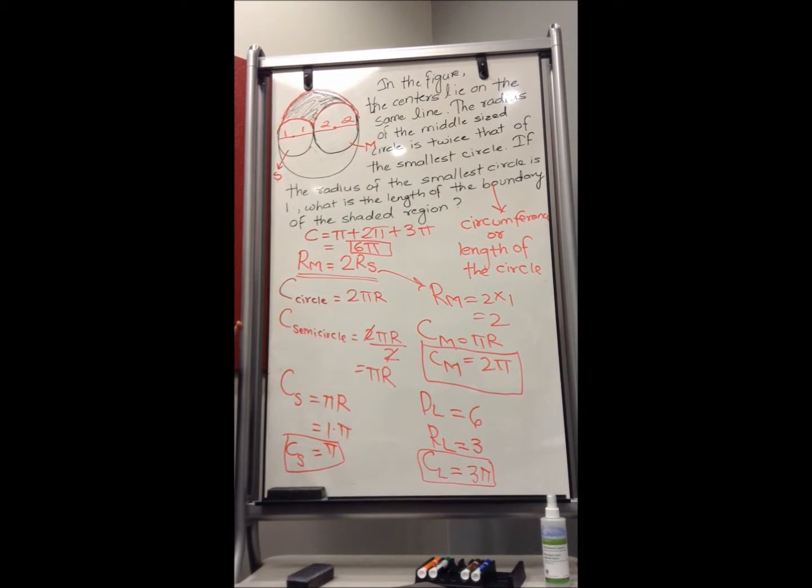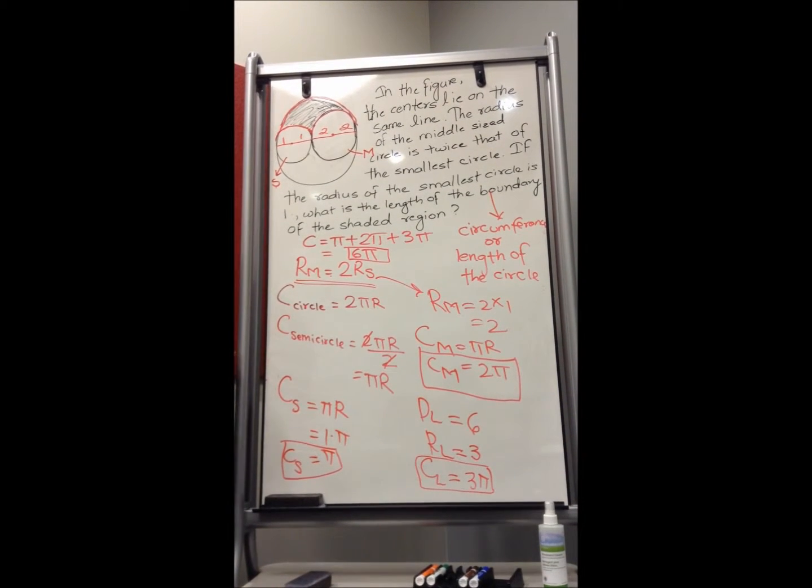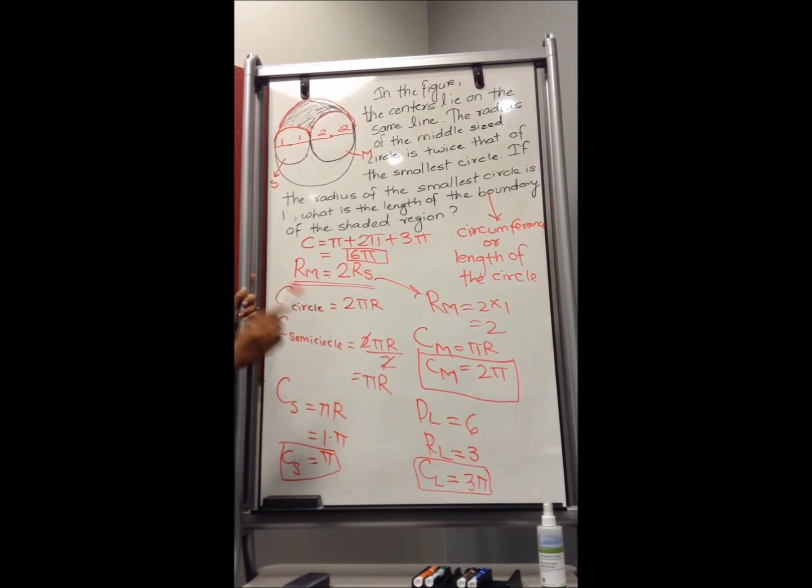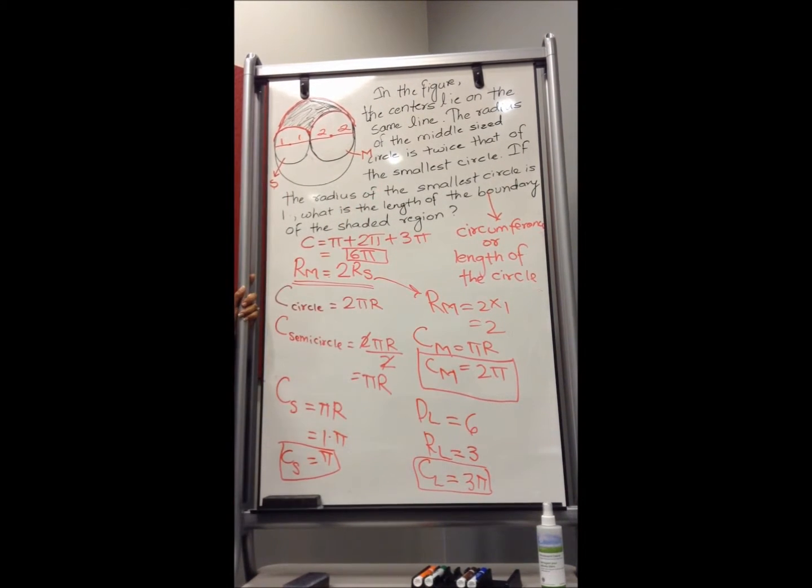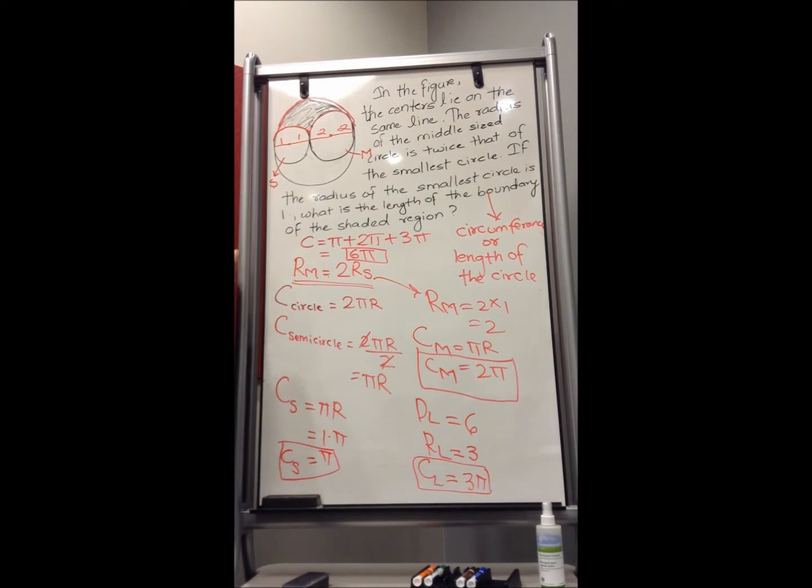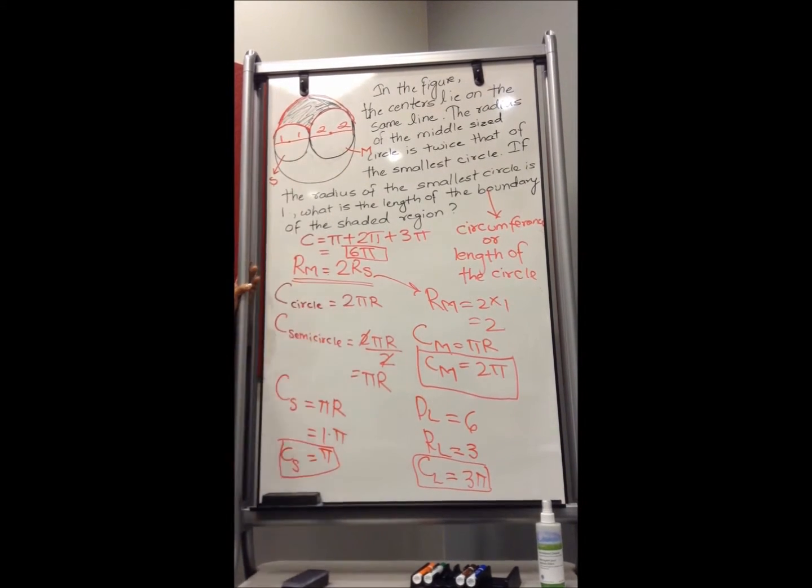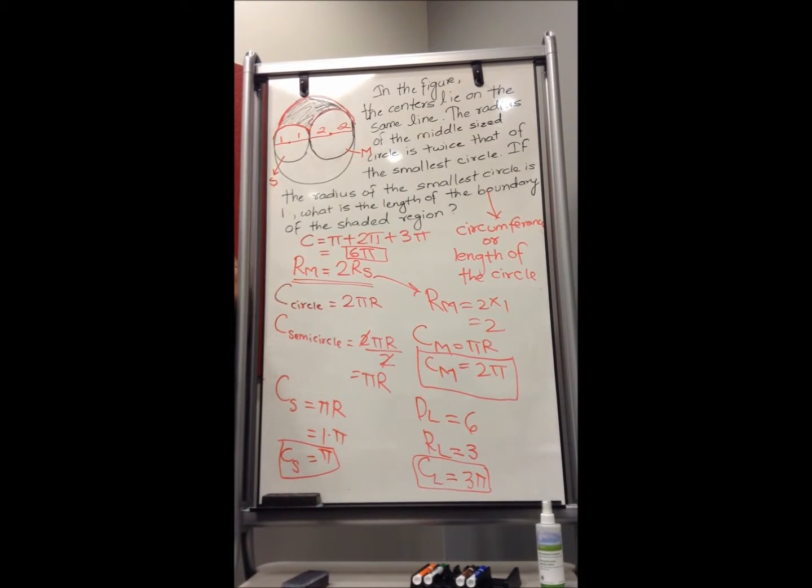So here in this problem, I've seen many students finding the area of the shaded region because they don't realize that the question is about the boundary of the shaded region, which means it's only this part which is marked with the red marker, not the inside part. The inside part is shaded just to show you the shaded region. But they are not actually asking you for the inside region. They are asking you for the boundary, which means the circumference or the length of the circle.